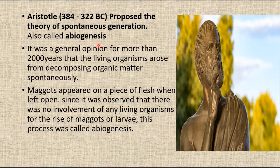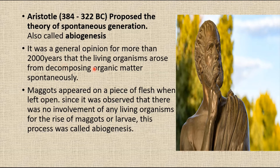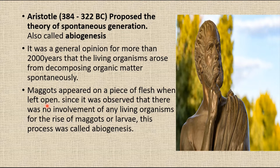Let's begin with the abiogenesis supporting theories. Aristotle proposed the theory of spontaneous generation, which is also called as abiogenesis. It was a general opinion for more than 2000 years that living organisms arose from decomposing organic matter spontaneously. For example, maggots appeared on a piece of flesh left open. Since there was no observed involvement of any living organism for the rise of maggots or larvae, this process was called abiogenesis.